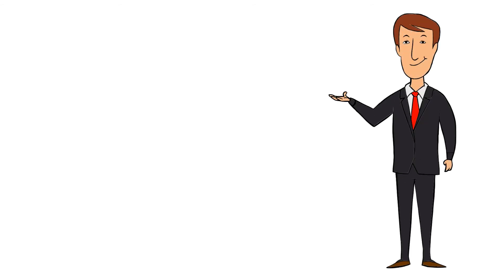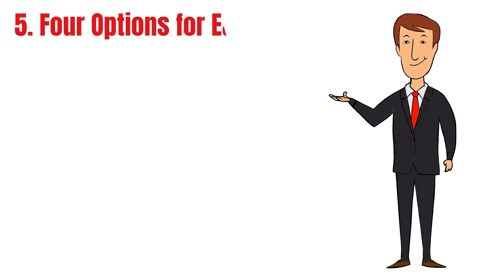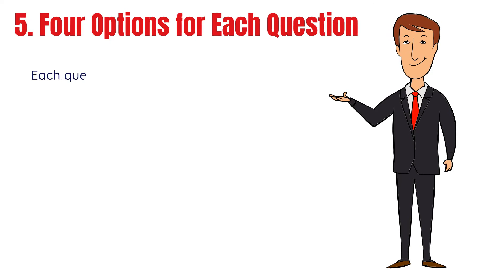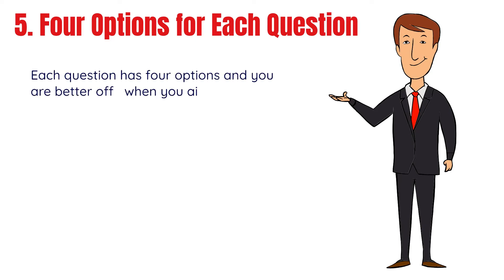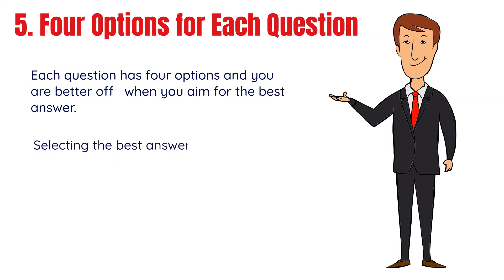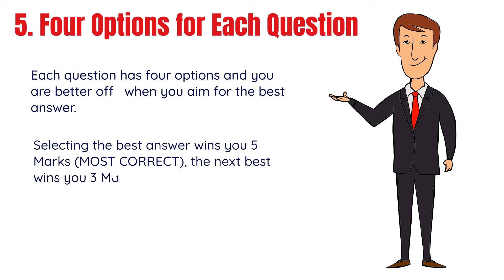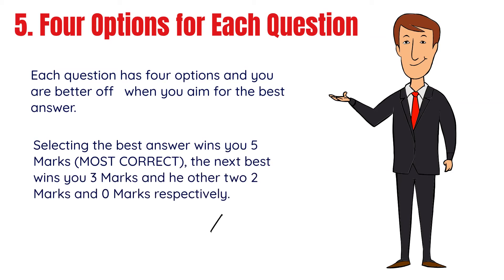Tip number five: four options for each question. Each question has four options and you are better off when you aim for the best answer. Selecting the best answer wins you five marks — that's the most correct answer. The next best wins you three marks, and the other two win you two marks and zero marks respectively.